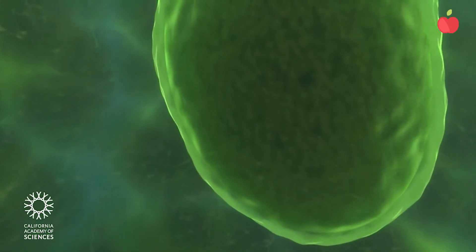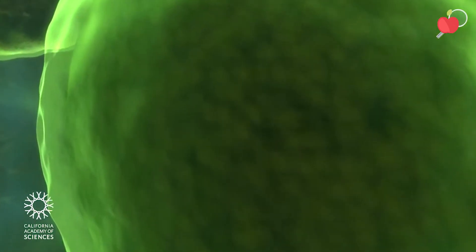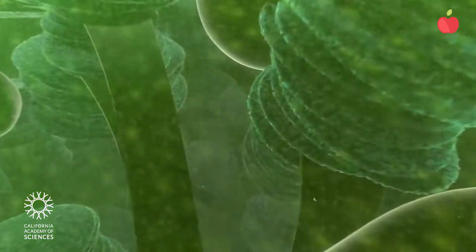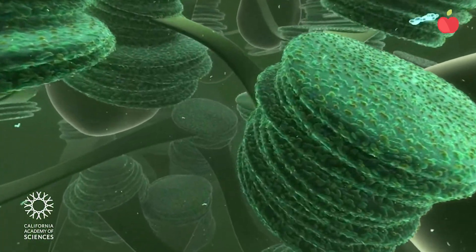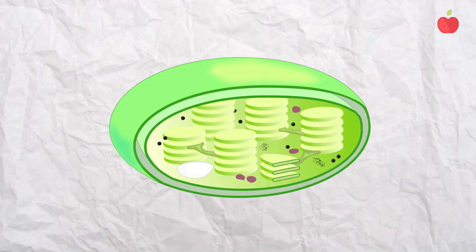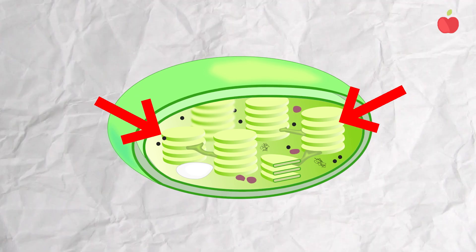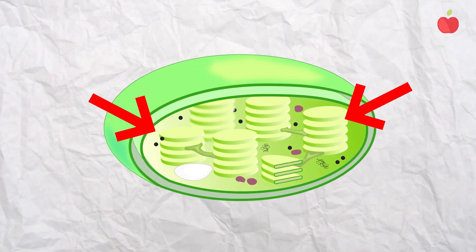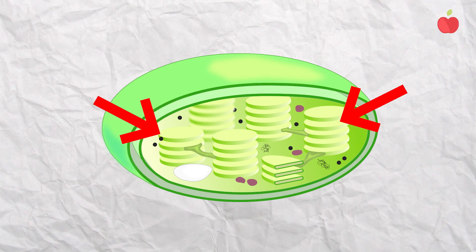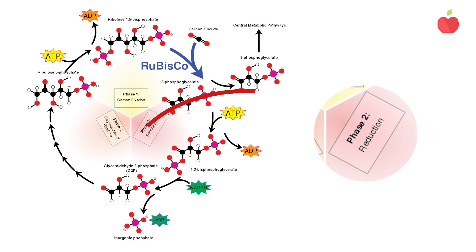Let's break down these phases and reactions. We'll start with the light dependent reactions. These take place in the thylakoid membranes of chloroplasts. Chloroplasts contain color pigments, like chlorophyll, which is green, to absorb sunlight. This process excites electrons and triggers a series of reactions. Some of these reactions create adenosine triphosphate, or ATP, and nicotinamide adenine dinucleotide phosphate, or NADPH.